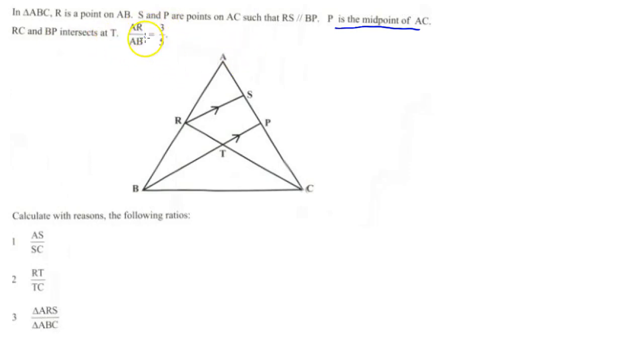AR over AB equals 3 over 5 is the same as saying AR is to AB in the ratio 3 is to 5. Sometimes if it's given like that, we must be able to go backwards and write it into fractions. Remember, fractions and ratios are the same thing. Calculate with reasons the following ratios.